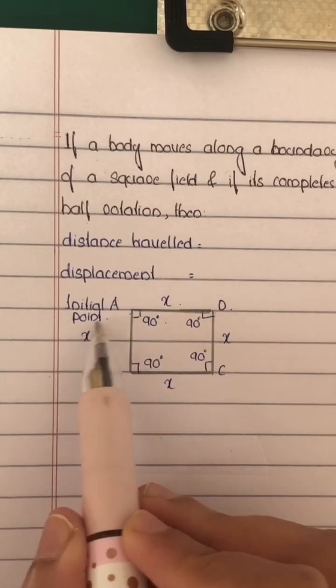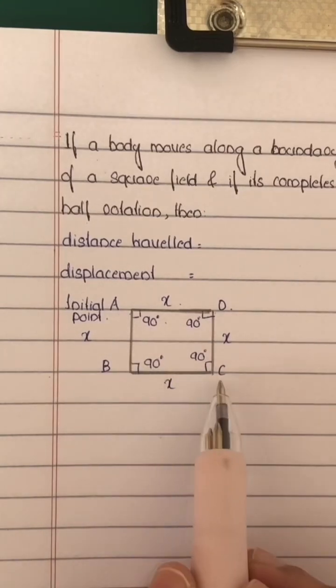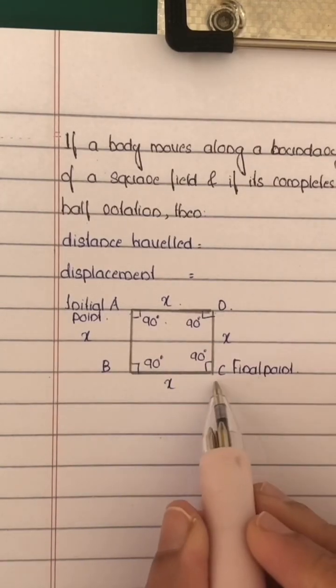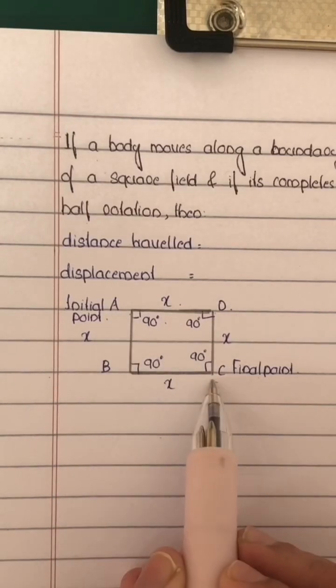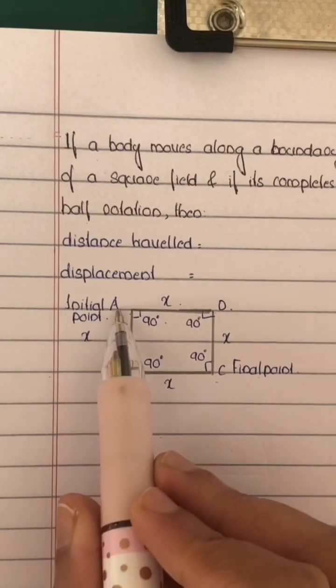That is initial point A, and half rotation means half of the square field, final point at C. So here, path followed by the body is A-B-C. So the length of the path followed is AB plus BC.